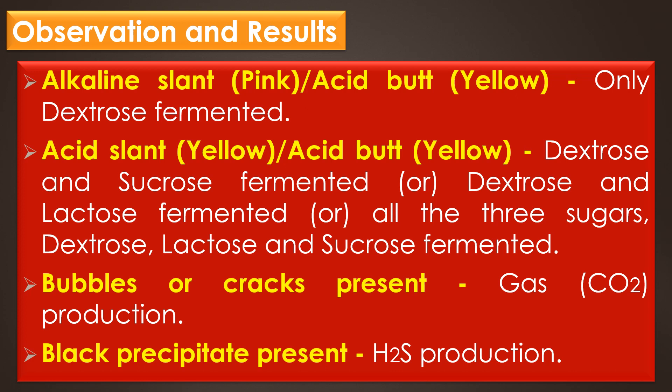Observation and results. An alkaline slant and alkaline butt, that is pink slant and pink butt, shows no fermentation — only peptone catabolism. An acid slant and acid butt, that is yellow slant and yellow butt, shows dextrose and sucrose fermented, or dextrose and lactose fermented, or all three sugars — dextrose, lactose, and sucrose — fermented. Bubbles or cracks present in the tubes show gas or carbon dioxide production, and a black precipitate shows hydrogen sulfide production.